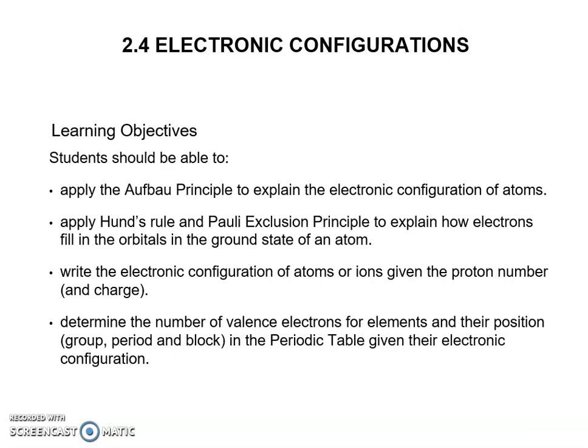The learning objectives for these subtopics are: students should be able to apply the Aufbau principle to explain the electronic configuration of atoms; students should be able to apply Hund's rule and the Pauli exclusion principle to explain how electrons fill in the orbitals in the ground state of an atom; students should be able to write the electronic configuration of atoms or ions given the proton number; and students should be able to determine the number of unpaired electrons for elements and their position in the periodic table given their electronic configuration.